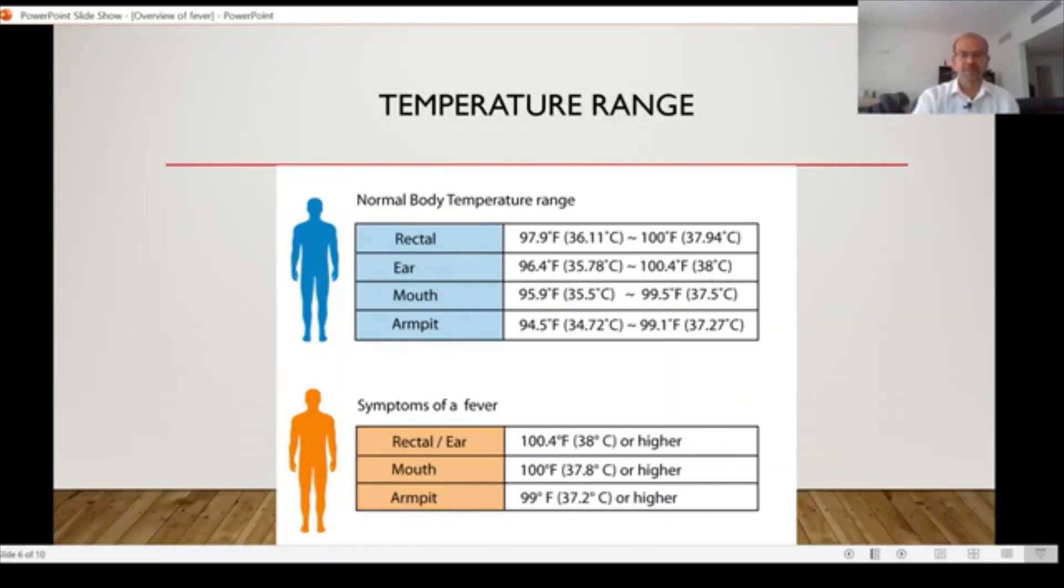In terms of fever, in a rectal or ear temperature record, we take 38 degrees Celsius or 100.4 degrees Fahrenheit as fever. In the mouth it's more than 37.8, and if it is an armpit recording, you may even take 37.2 and above or 99 degrees and above as fever. So where you record makes a difference.